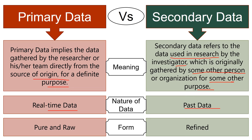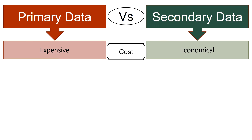In terms of form, primary data is always in its basic, pure and raw form. As against, secondary data is refined data, meaning that it is organized and processed by the previous researcher according to his needs. When it comes to cost involved, the collection of primary data requires some investment to conduct the research on the topic, hence it is an expensive process. Conversely, secondary data is economical because the primary research is already performed by someone else.